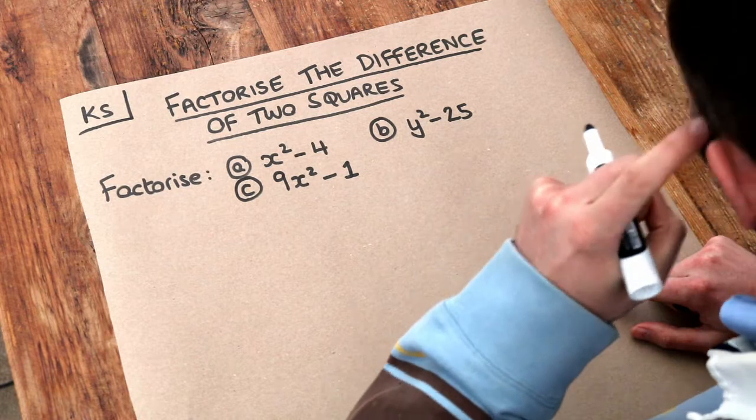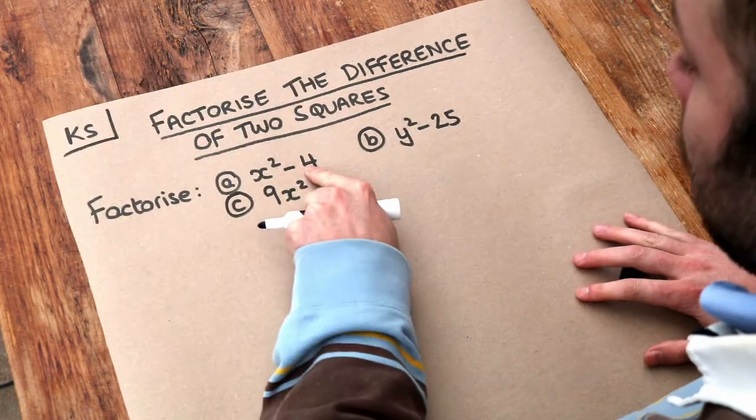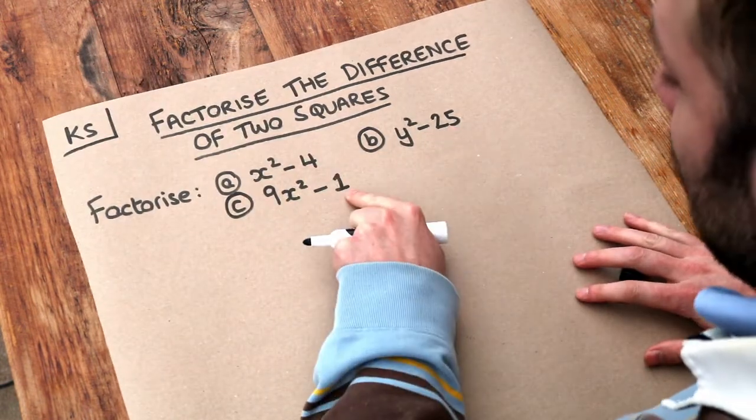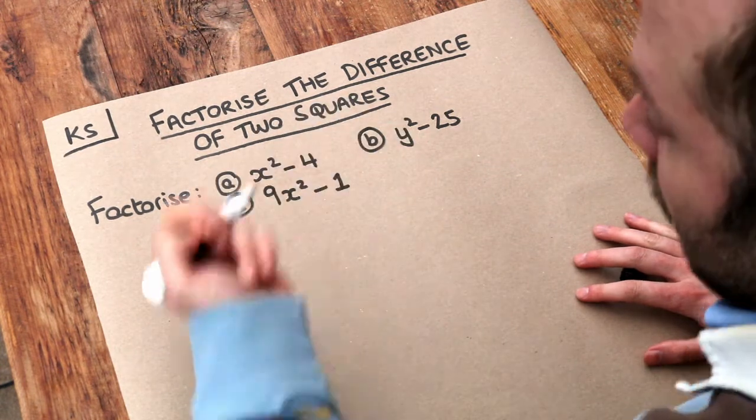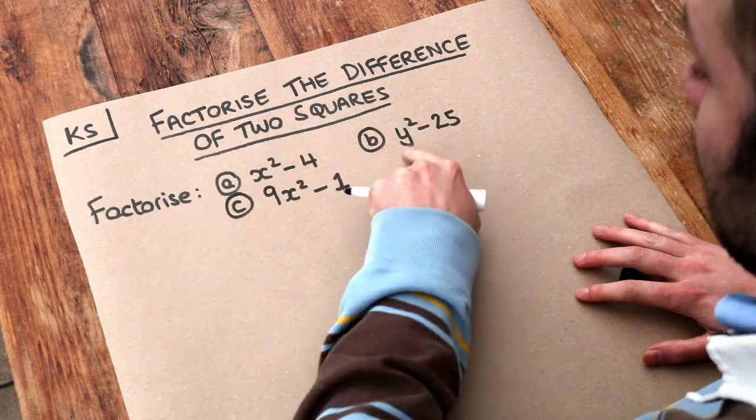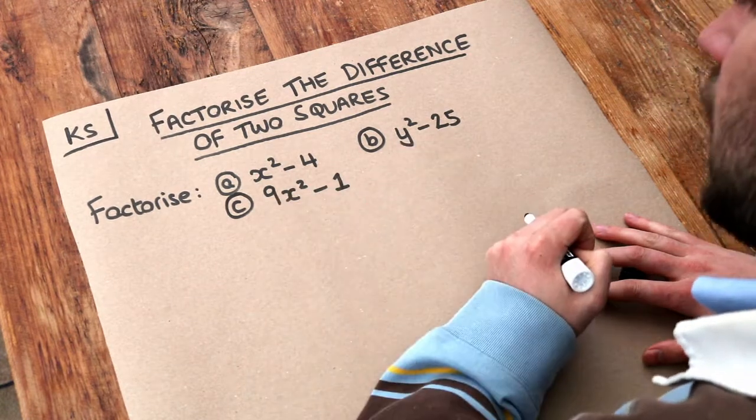It could be a square number or a variable squared. We can see 4 is a square number, 25 is a square number, 1 is a square number. And then x squared is something squared, that's y squared, and this is something squared as well.